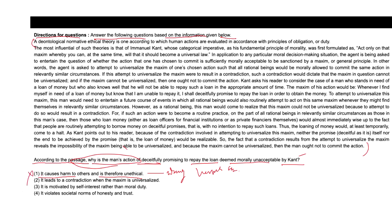Look at option two: it leads to a contradiction when the maxim is universalized. This choice correctly identifies that Kant's moral evaluation is based on whether universalizing the action's principle or maxim leads to a contradiction. If everyone acted on this maxim, it would cause a breakdown in the practice of loaning money, making the action morally unacceptable.